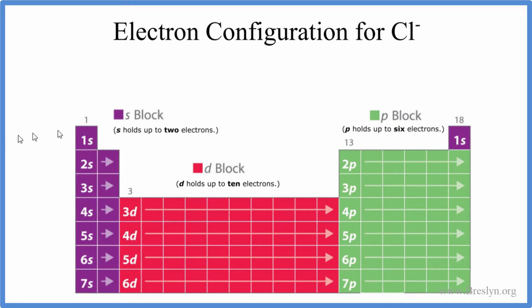Before we do that, let's write the electron configuration for just chlorine as it's found on the periodic table. So chlorine is a neutral element. All the elements on the periodic table are neutral.